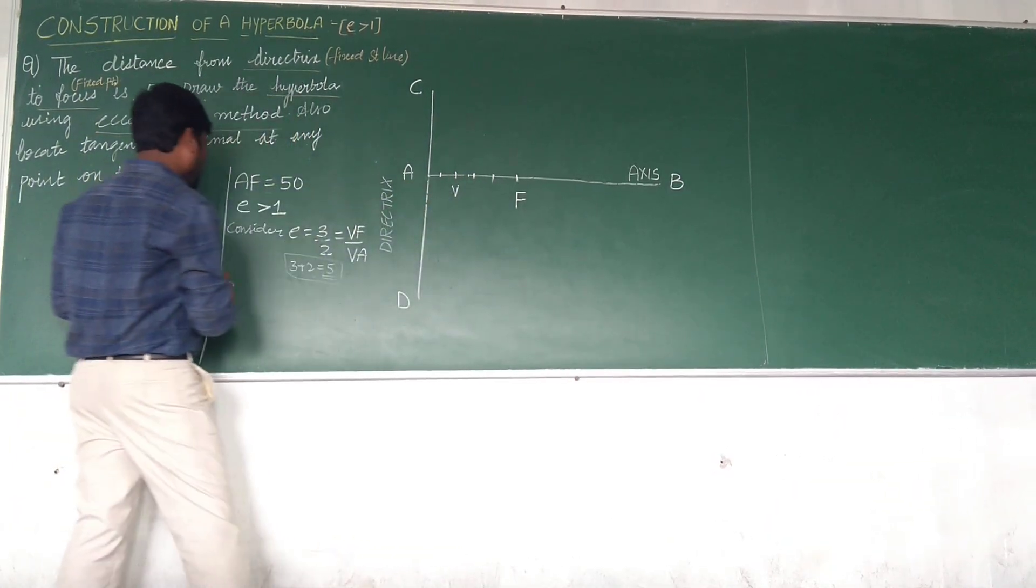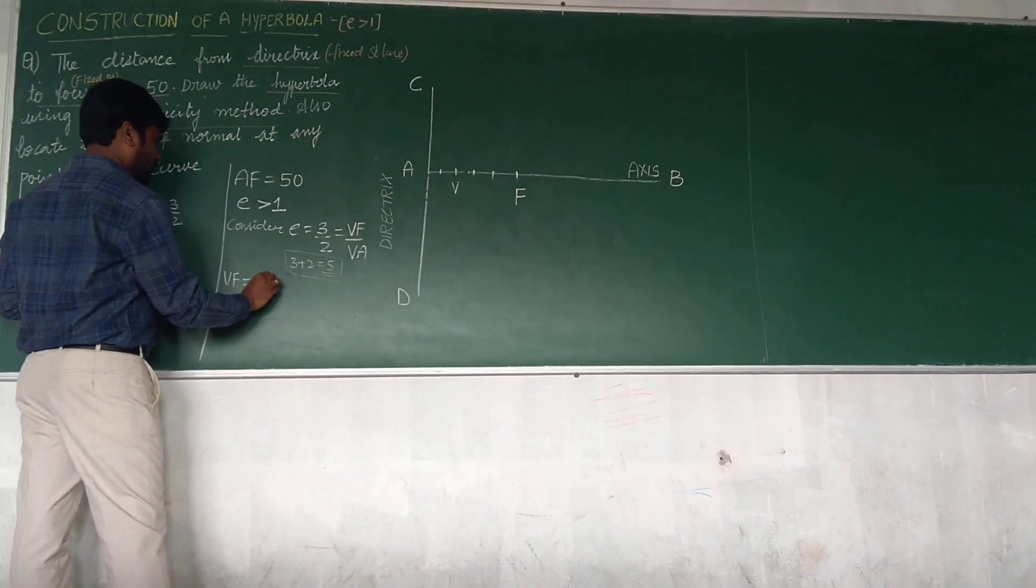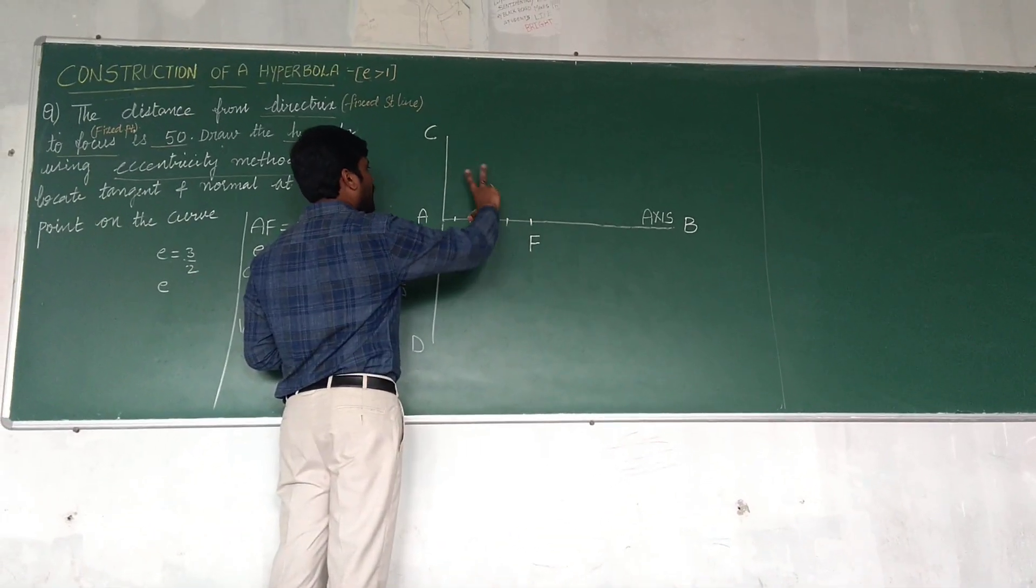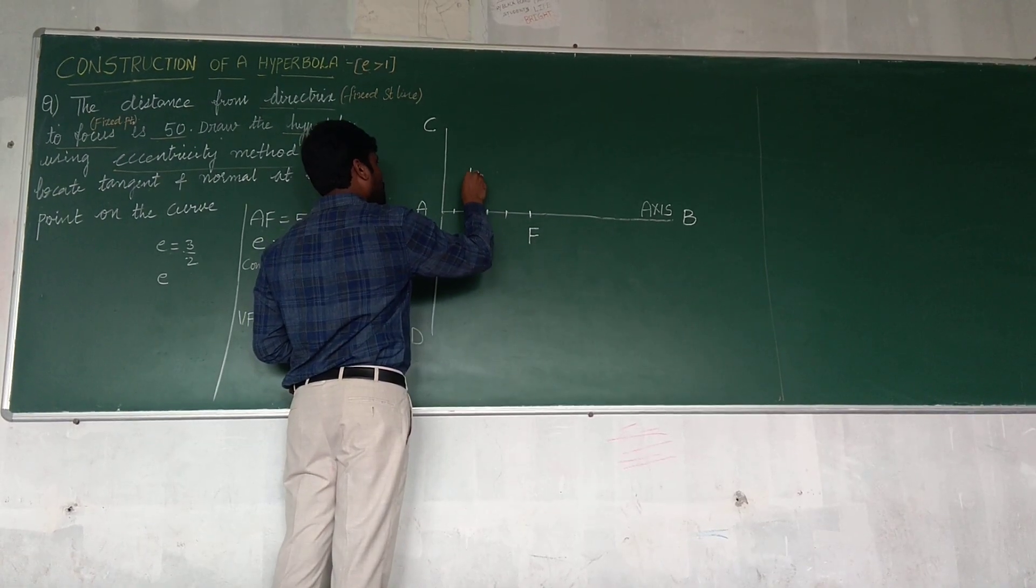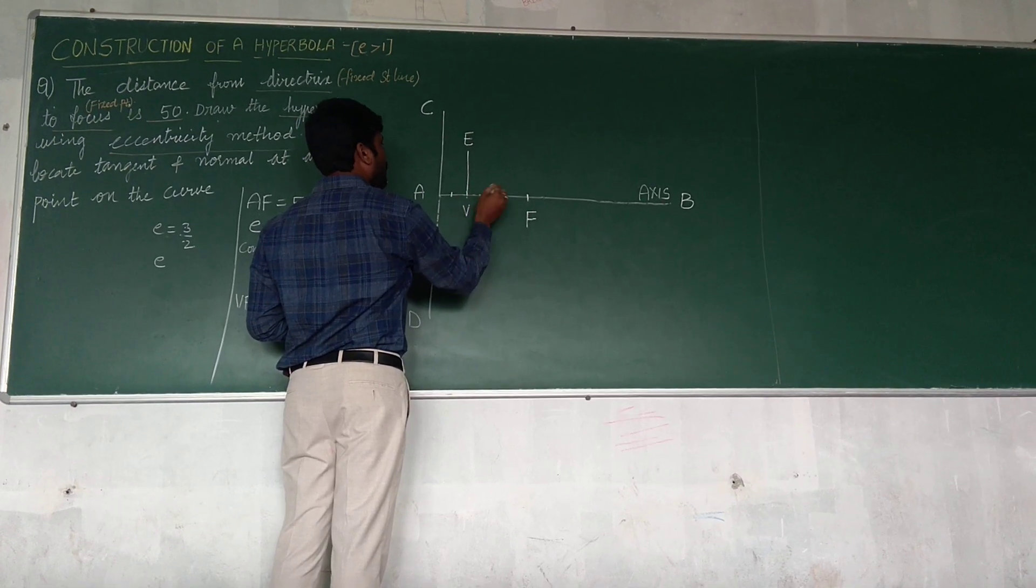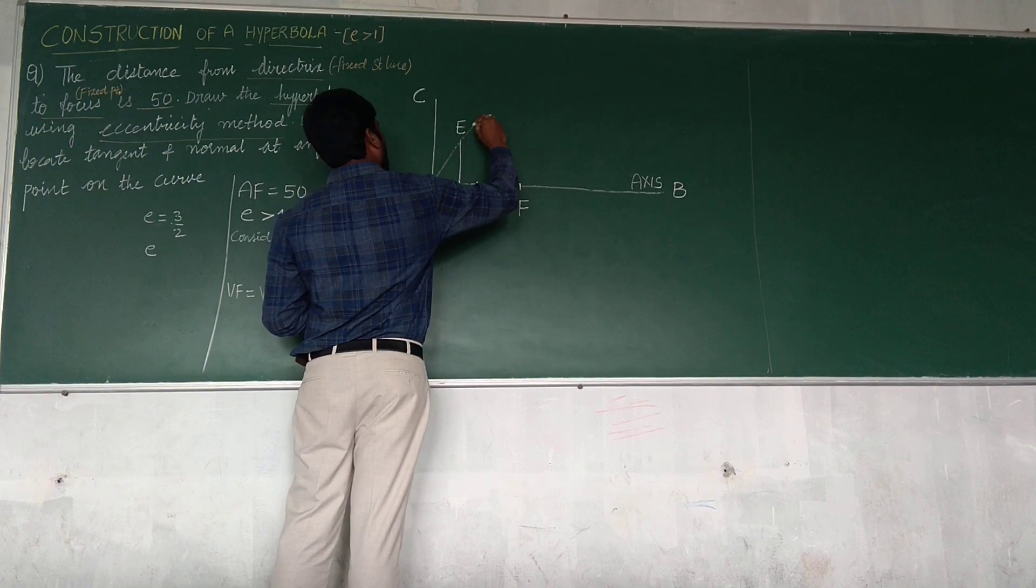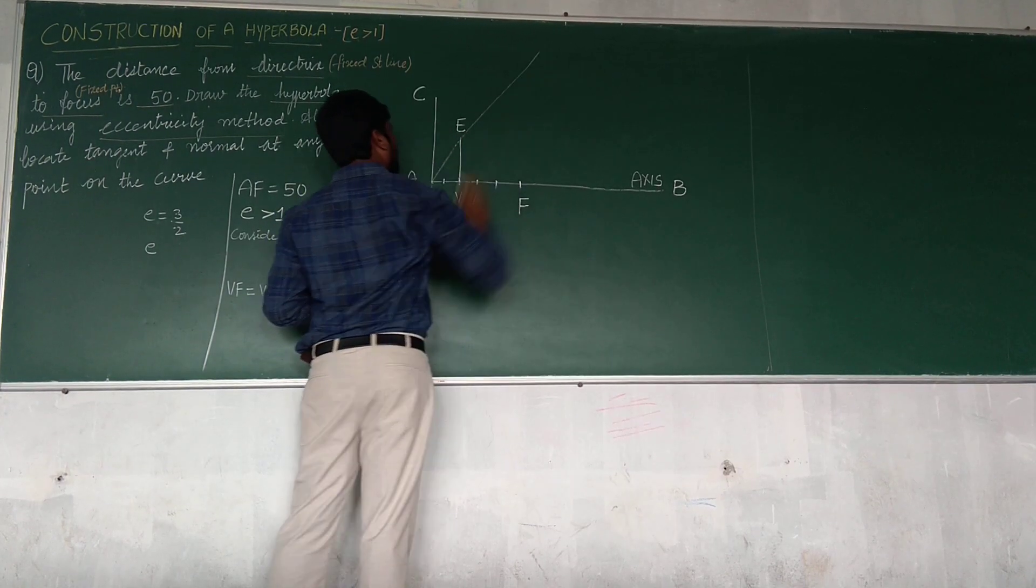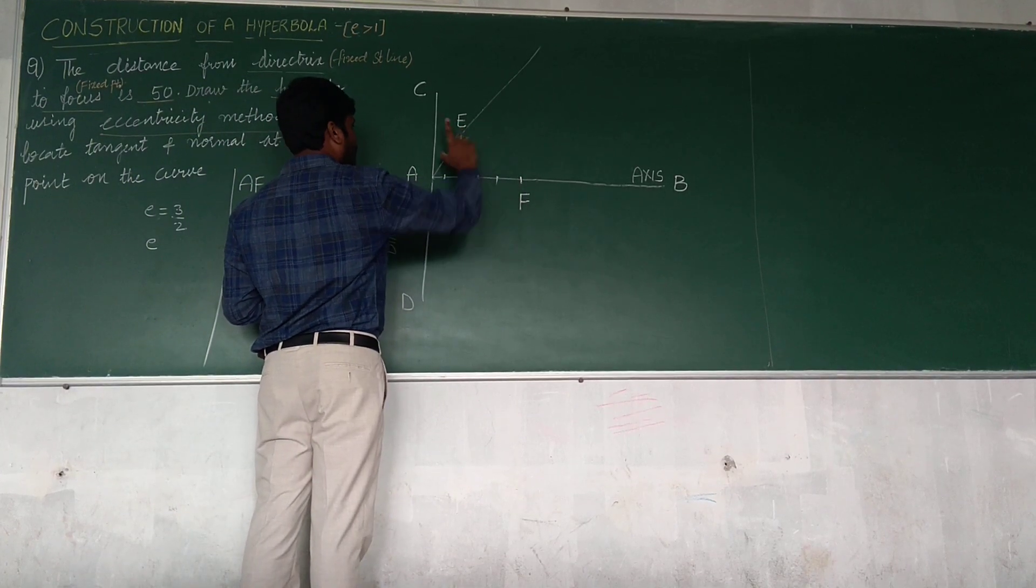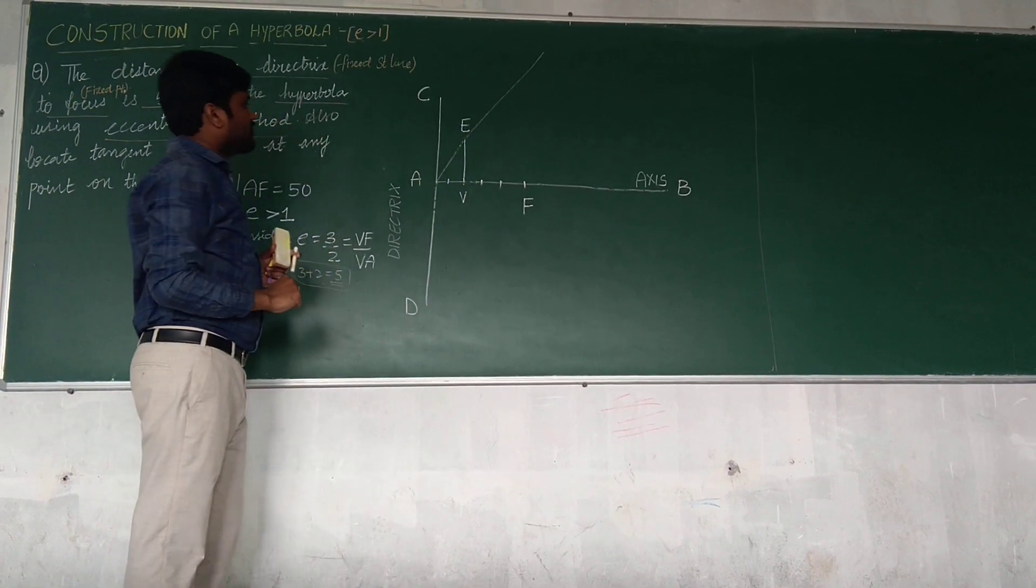What is the next step? VF is equal to VE. I need to locate a latus rectum point so that I should measure VF value and draw the perpendicular line to the axis, that is nothing but VE. VF equals to VE. Next, join A to E and extend it further, the line anywhere. Extending it further, draw A line to VE and extend that line.